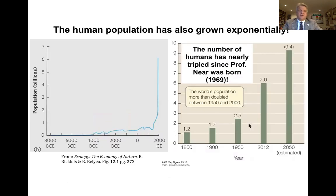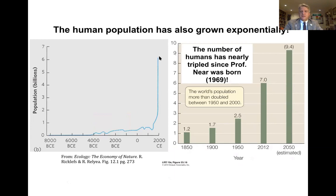Another species that has experienced fairly recent exponential population growth has been our own — humans. Starting about the midpoint of the 19th century, that is the onset of the Industrial Revolution, the population of our species has exploded. In my own lifetime of only 50 years, the number of humans on Earth has nearly tripled, with estimates of 2015 approaching 9.5 billion people on Earth.